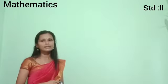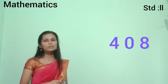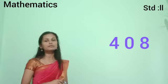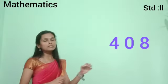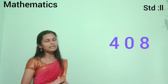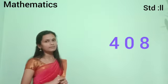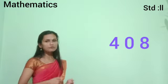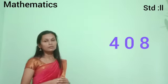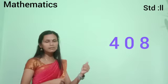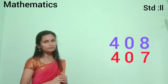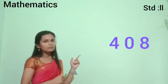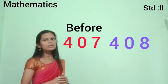Another example: 408. Which number comes before 408? In 408, the last digit is 8. To get the number before, we move backward — 7 comes before 8, so 8 becomes 7. The first two digits remain the same. So the number before 408 is 407.